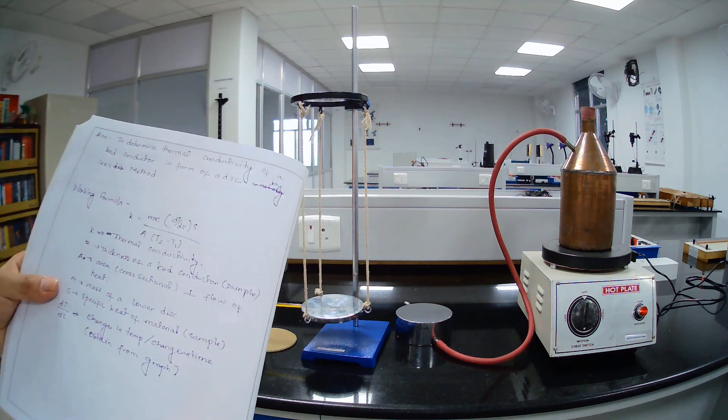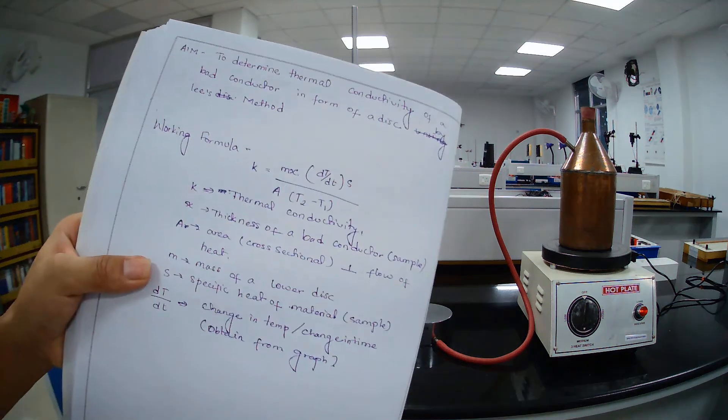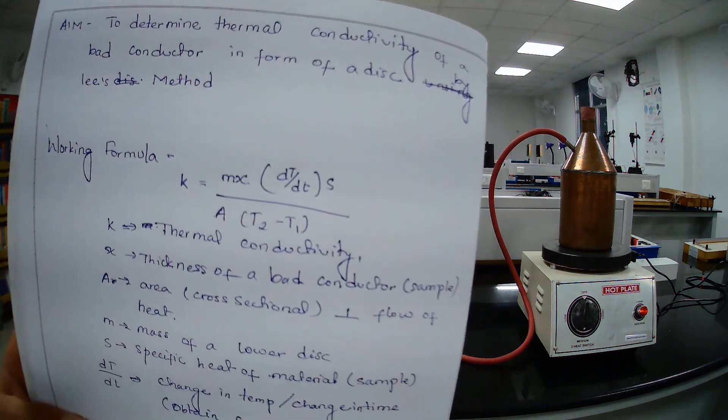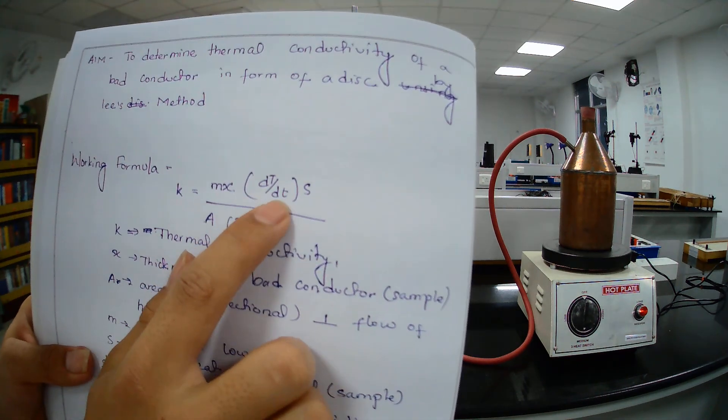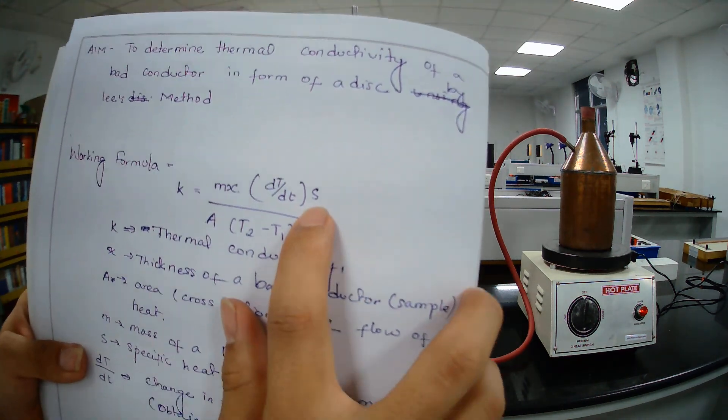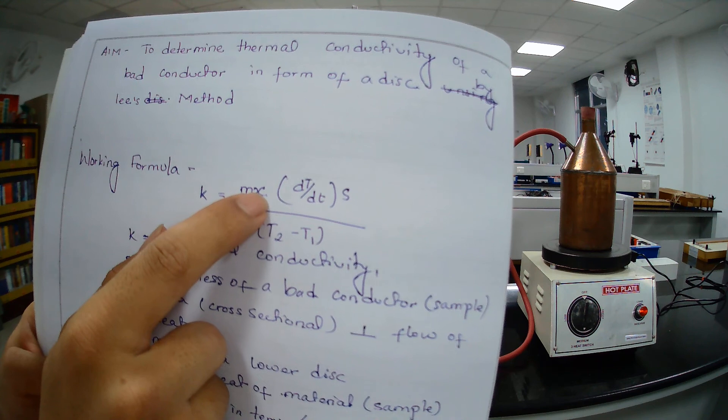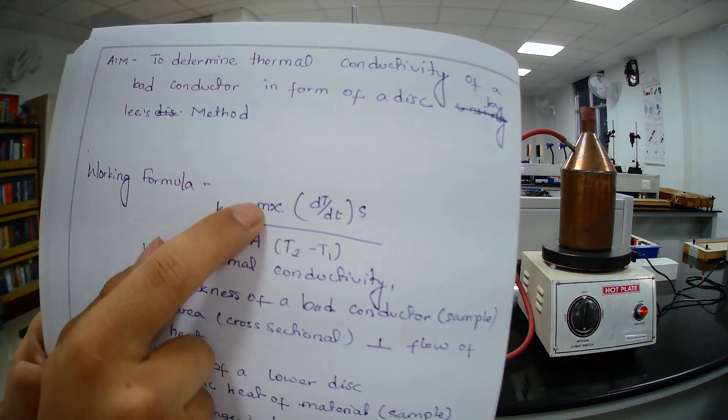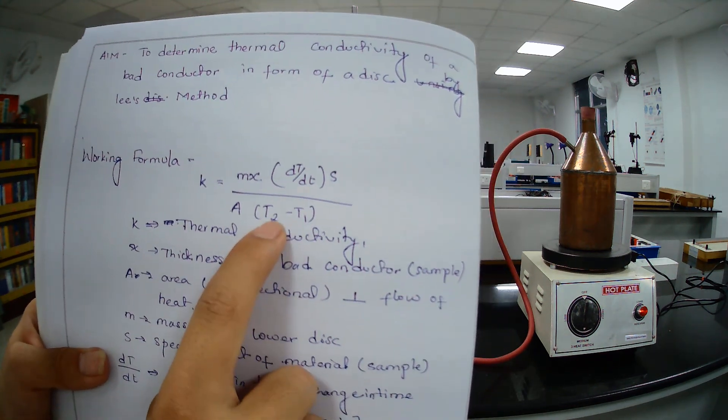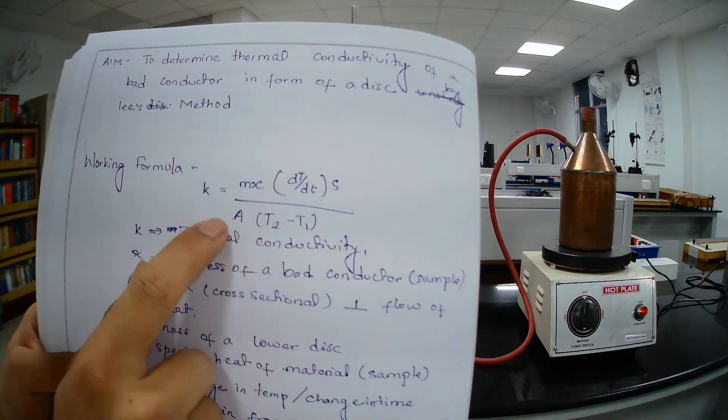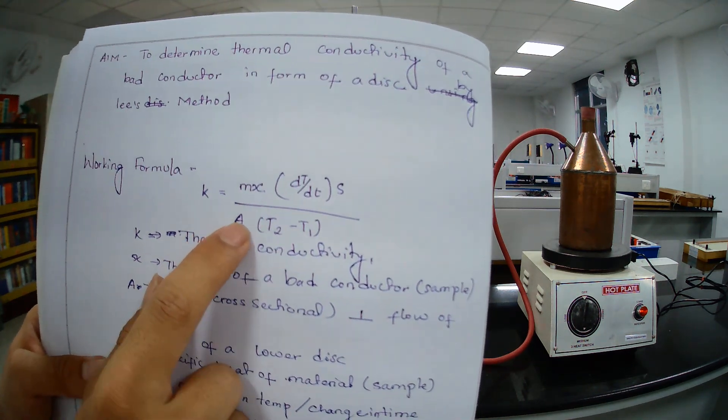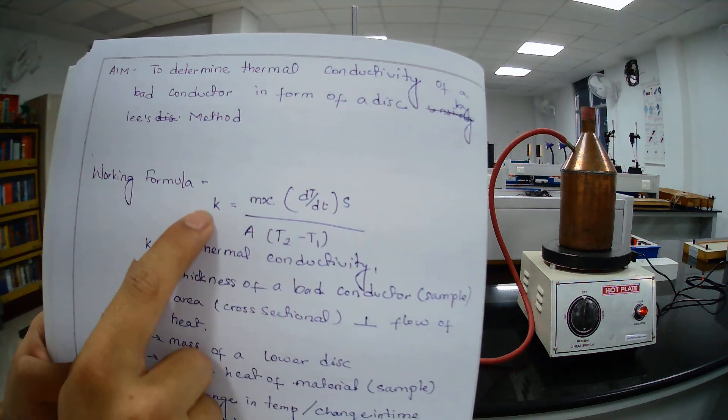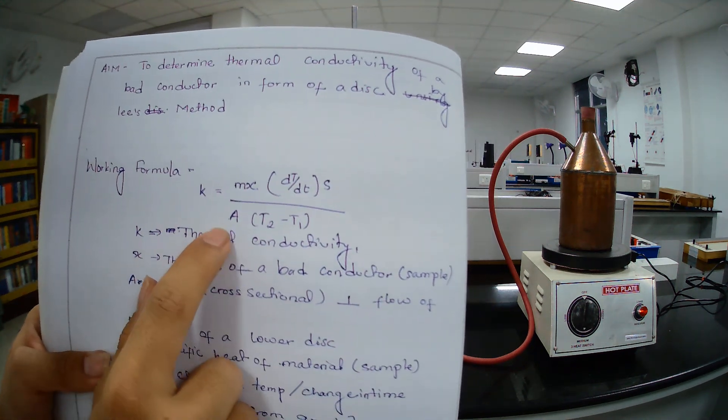Now we have, now from the graph we find dT/dt and this is given. This x we have already measured. This mass also we have already measured. We have found T2 minus T1 and this is area. We have diameter so we can calculate the area. Now we can find the value of this thermal conductivity.